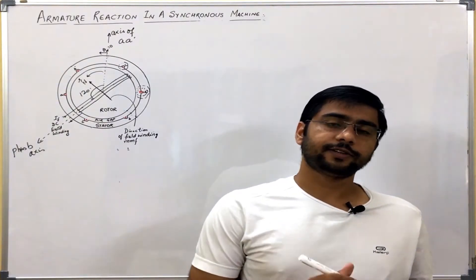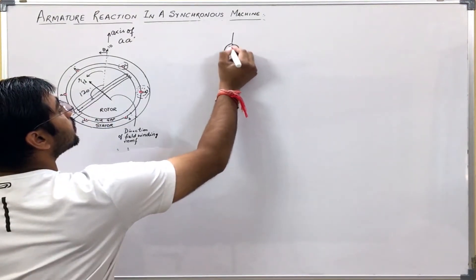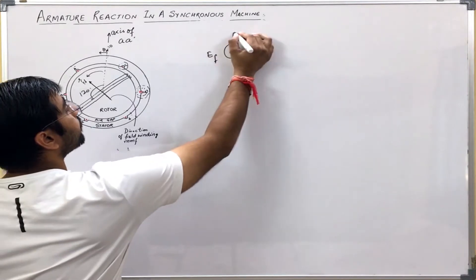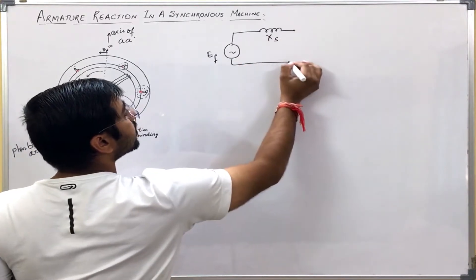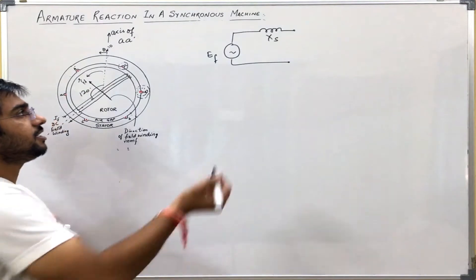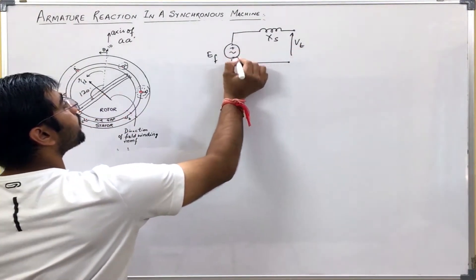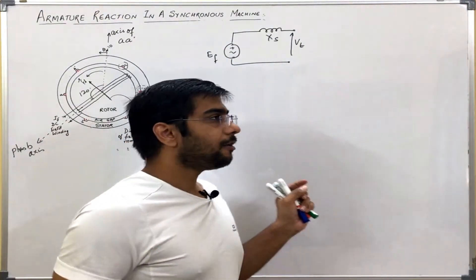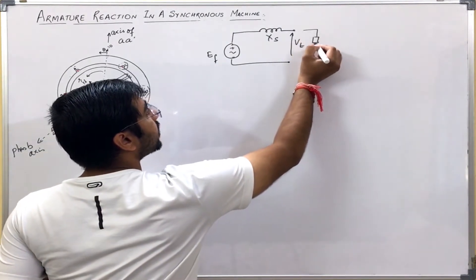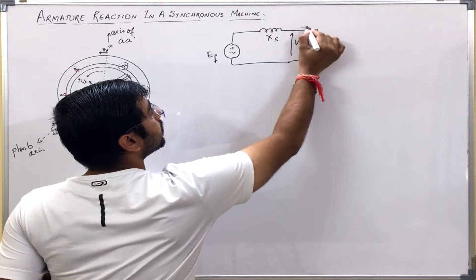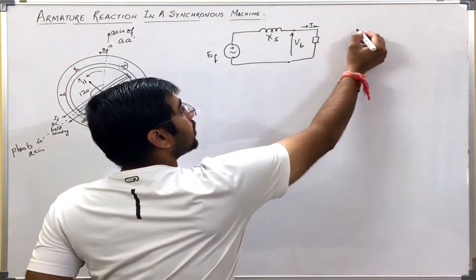So let us take the case of the generator first. In the previous video, I have derived the equivalent model as EF axis. In this discussion, we will assume that the resistance is negligible, and this was given as terminal voltage. So now, first let us take that the load is such that I connect the load here — this is Ia — load is such that the current is lagging Va, that is a lagging load.